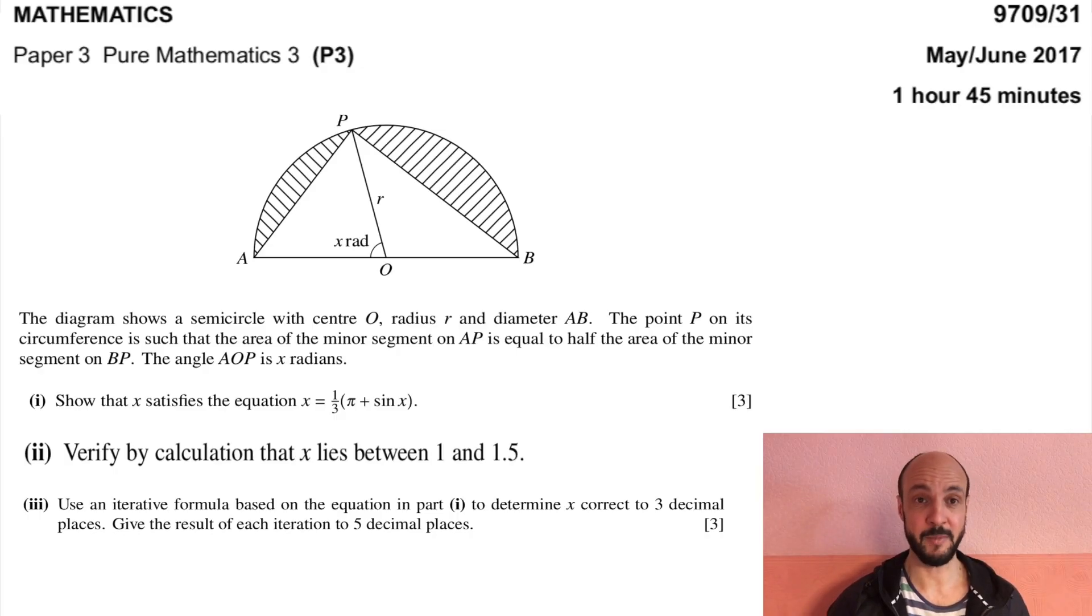The diagram shows a semicircle with centre O, radius R and diameter AB. The point P on its circumference is such that the area of the minor segment on AP is equal to half the area of the minor segment on BP. The angle AOP is X radians.